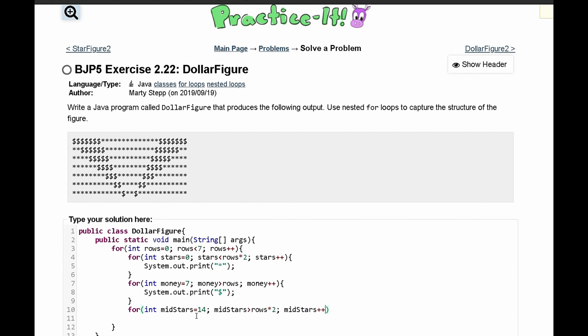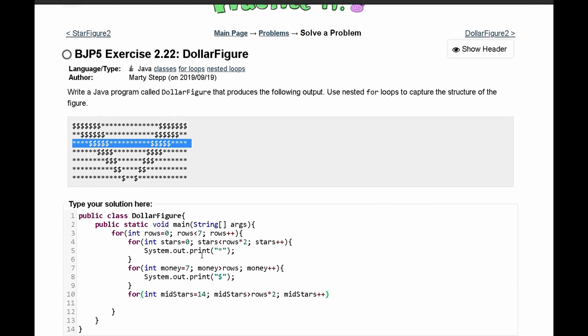We can test this out to see if this works. Let's say that we're in our third row right here. That means our rows is going to be two because this is our zero row, our first row, and this is going to be our second row. So rows is two, two times two is four. MidStars has to be ten. We can see one, two, three, four, five, six, seven, eight, nine, ten stars are printed, so that means this is correct.